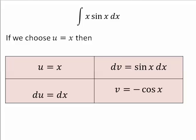If u equals x, then du equals dx. And dv would have to be sin(x) dx, which makes v equal to negative cos(x).